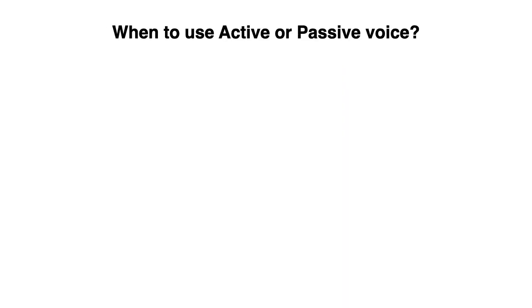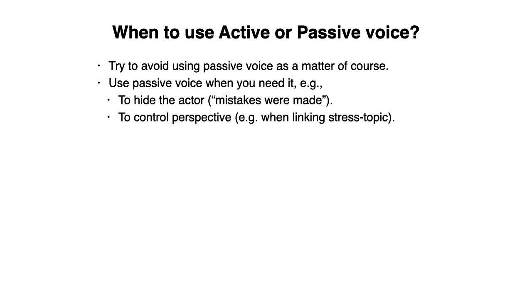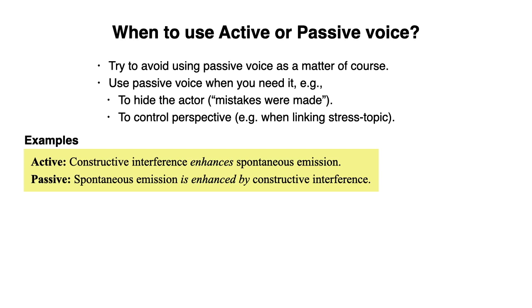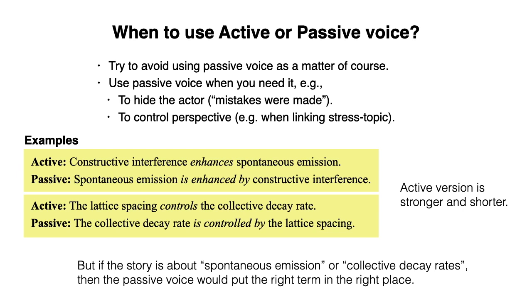So when should you use the active or passive voice? Because the passive voice is weaker, you should try to avoid it as a matter of course, but use it when you need it — for example, to hide the actor or to control perspective. In the active voice: "Constructive interference enhances spontaneous emission." In the passive: "Spontaneous emission is enhanced by constructive interference." Similarly, active: "The lattice spacing controls the collective decay rate." Passive: "The collective decay rate is controlled by the lattice spacing." If the story is about spontaneous emission or collective decay rates, the passive voice puts the right term in the right place.